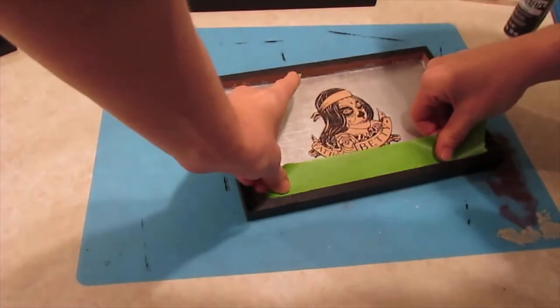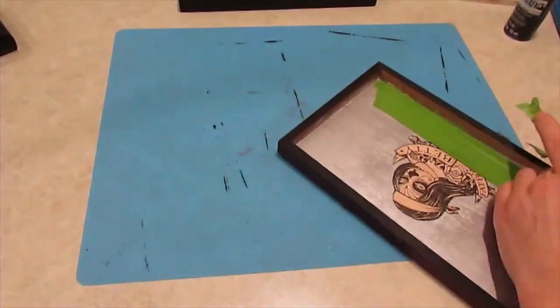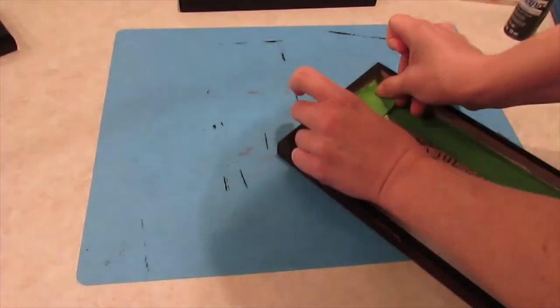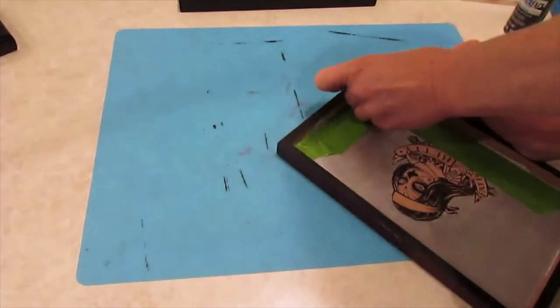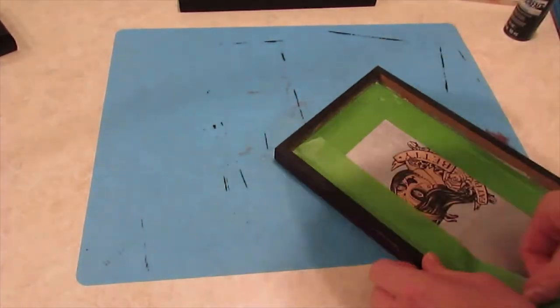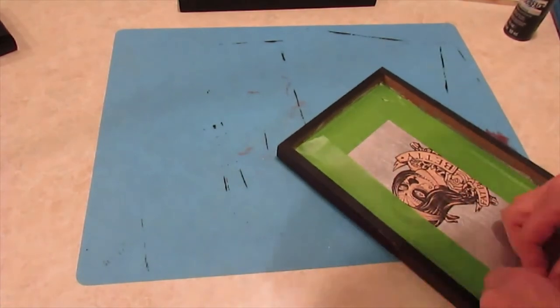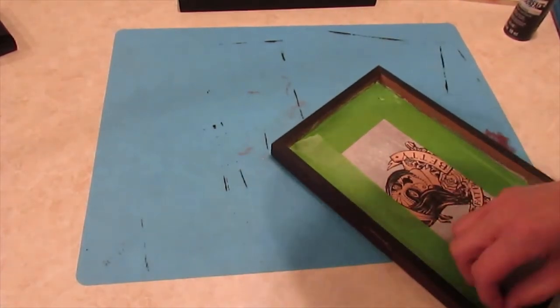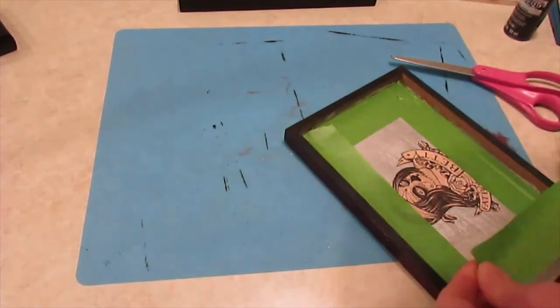Now that the silver is dry on the top, I'm just going to tape this off so that I can paint the inside of this lip and get a nice, clean, sharp edge.